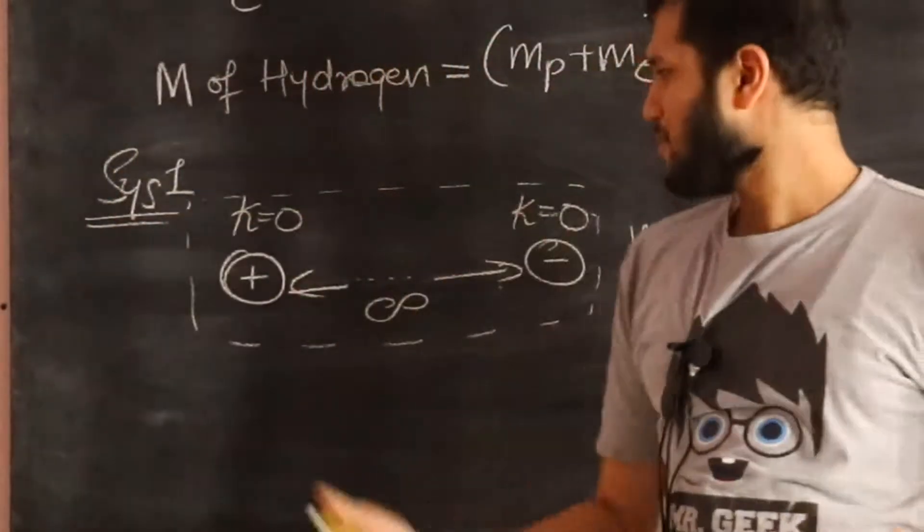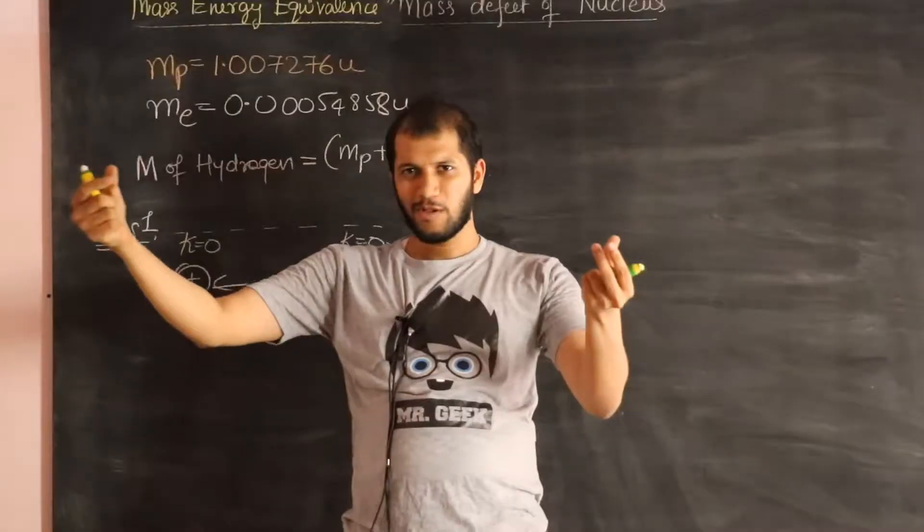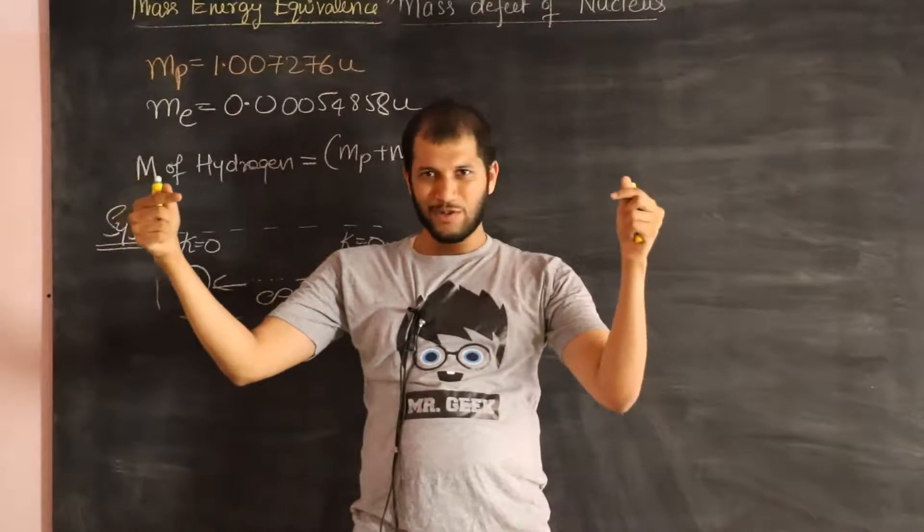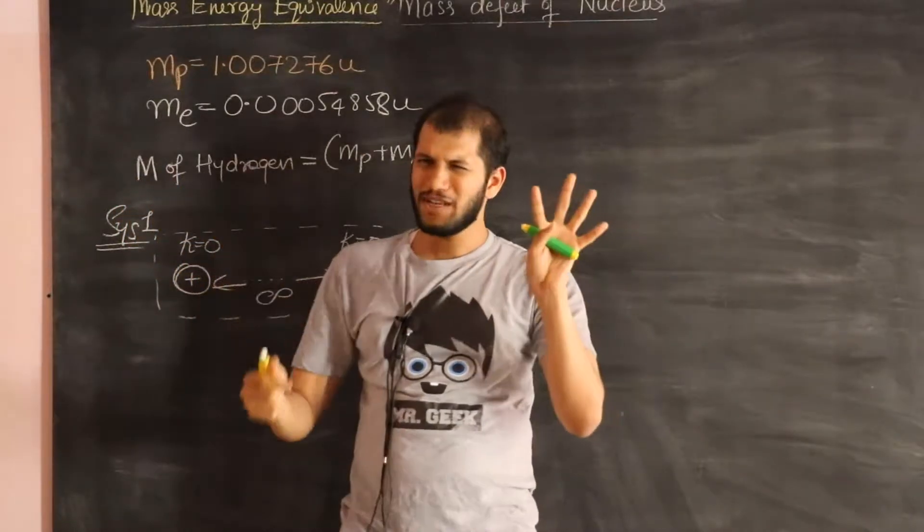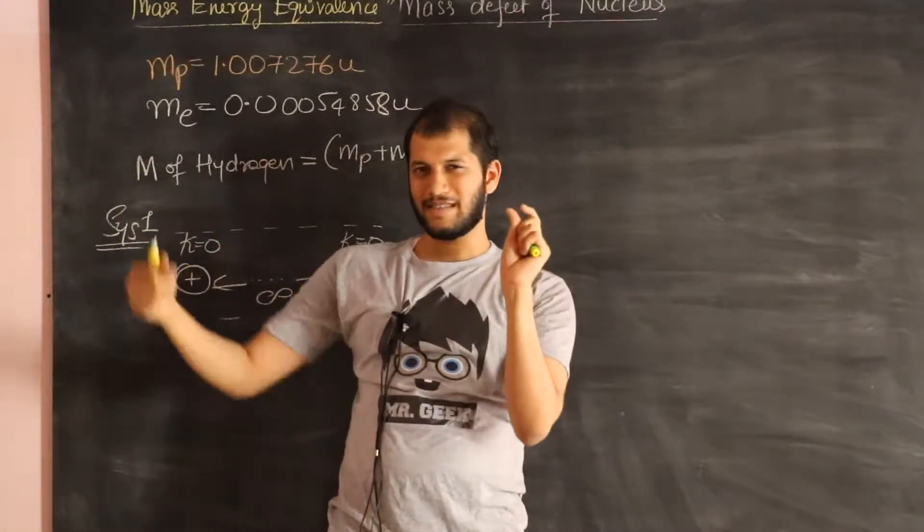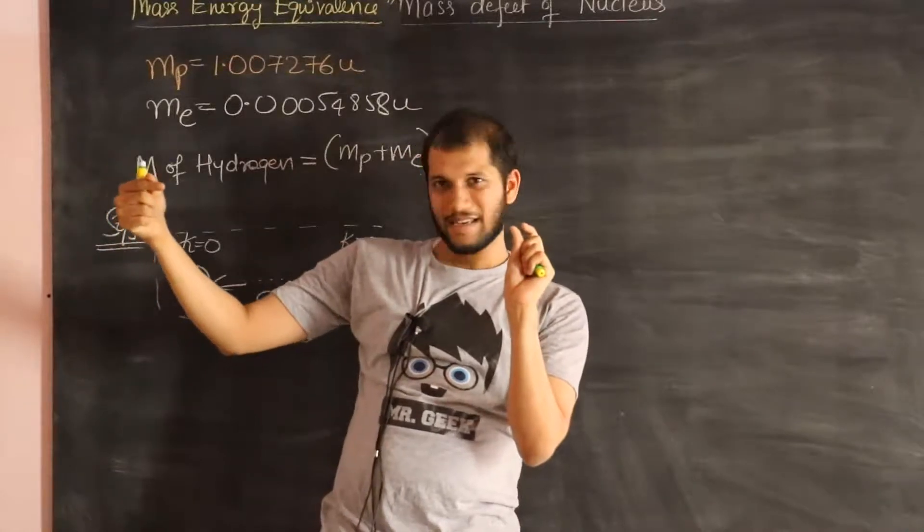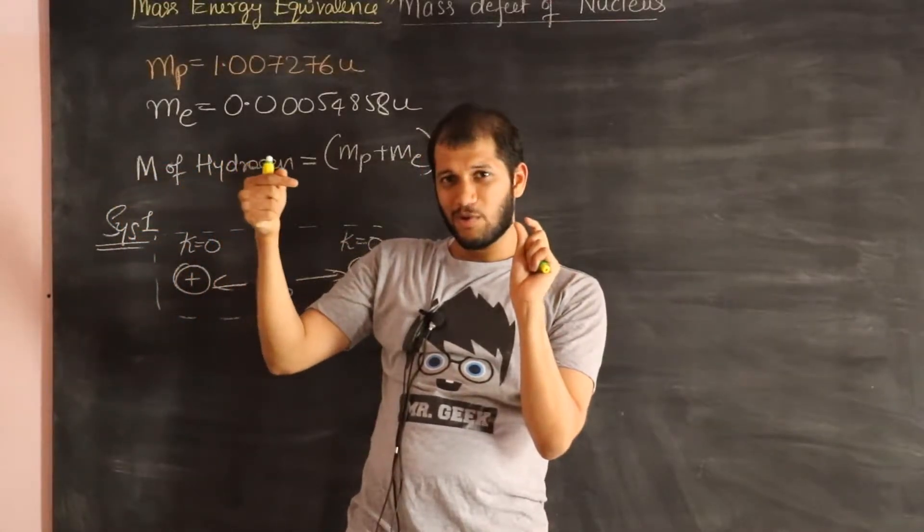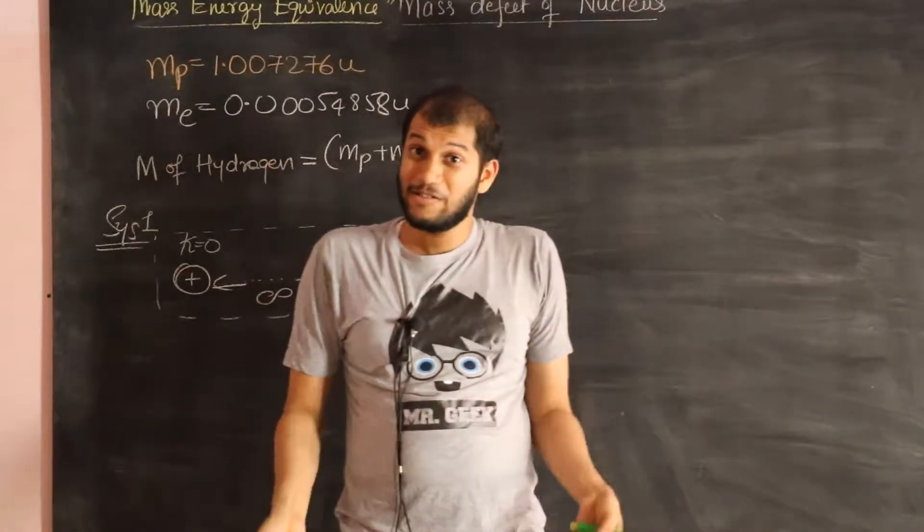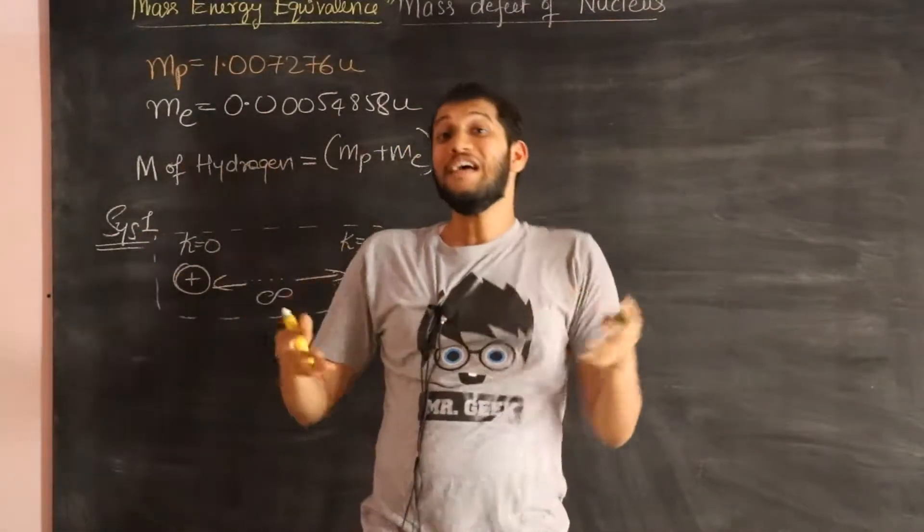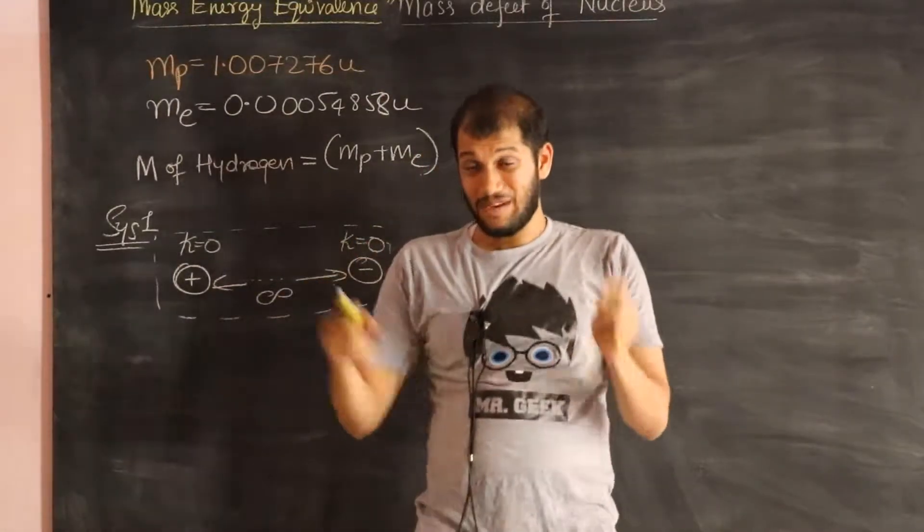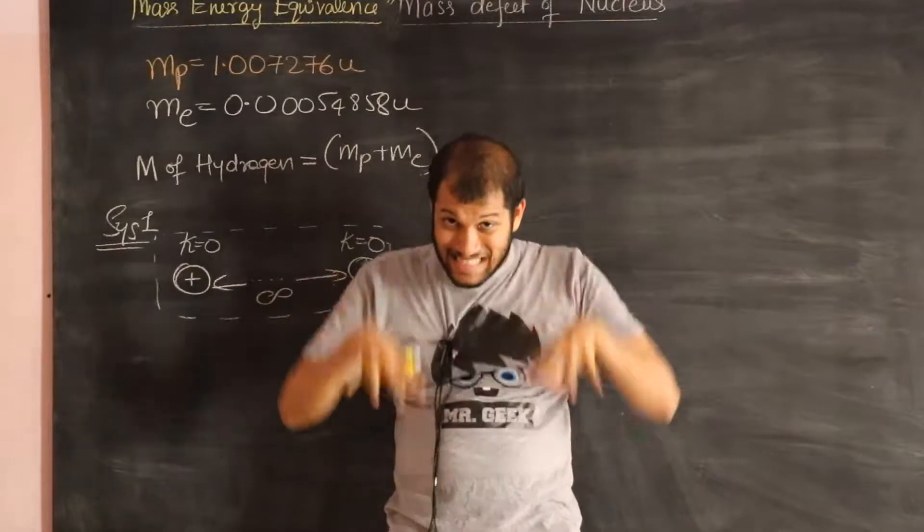But now let's think about what happens when a proton and electron come close to each other. So if I let them go, the proton and electron will accelerate close to each other. The proton is massive, so let's say the proton remains stationary. The electron keeps accelerating towards the proton. As the electron accelerates towards the proton, the proton's kinetic energy increases, but at the same time, its potential energy decreases.